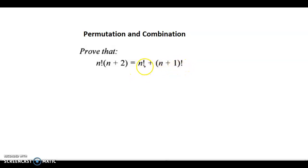It would be easier if we start with the right hand side and then try to prove it equal to the left hand side, because we have two factorial terms that we can convert into a single factorial. So let's begin with the right hand side first and see whether we can obtain the left hand side.